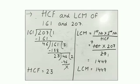161 multiplied by 207, and what is HCF? 23. So we divide by 23. We can cancel it by table 23. 23 times 1 is 23 and 23 times 7 is 161. Now we will multiply 7 by 207 and we get 1449. So our LCM is 1449. HCF is 23 and LCM is 1449.